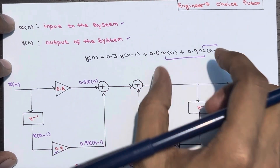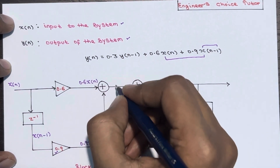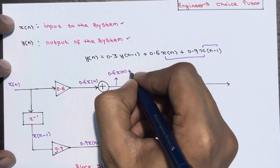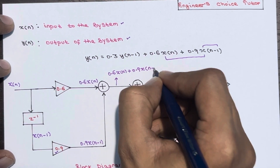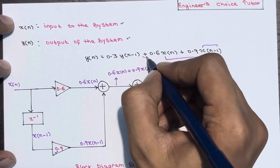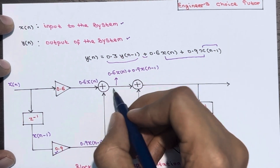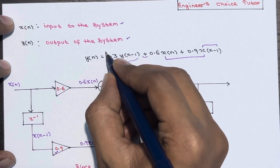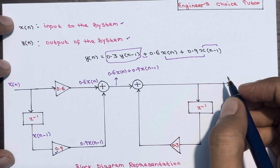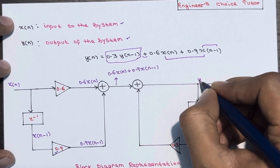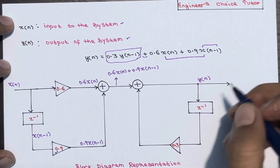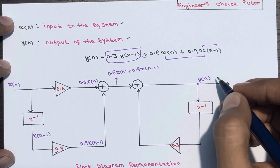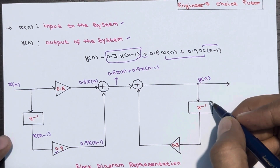At that point we get x(n-1), which is multiplied by 0.9 through a constant multiplier to get 0.9·x(n-1). Summing with the first adder, we achieve 0.6·x(n) + 0.9·x(n-1). This portion needs to be added with the third part, which is why another adder is required. This combined signal acts as input for the second adder.